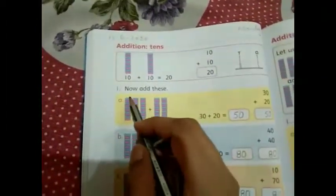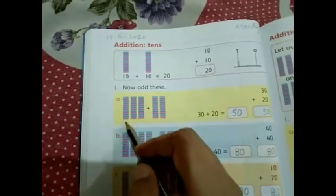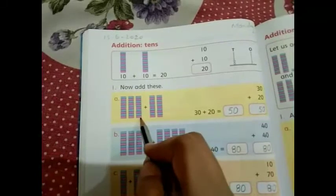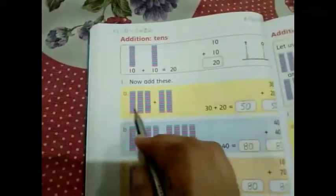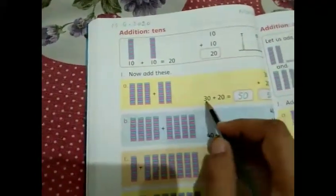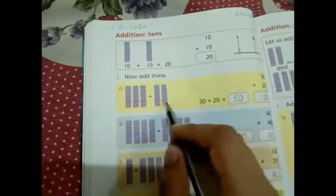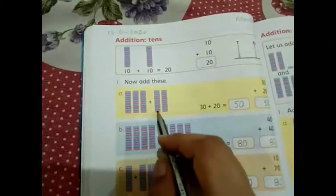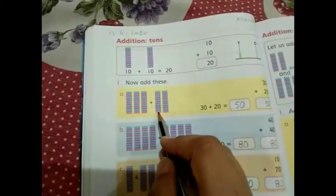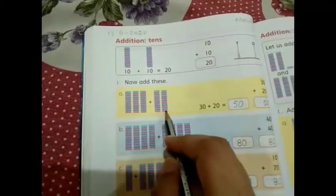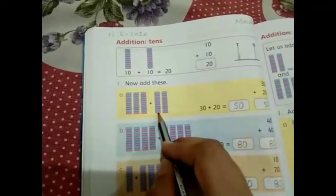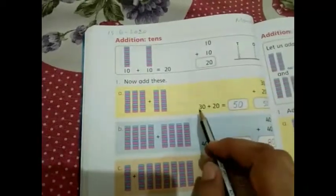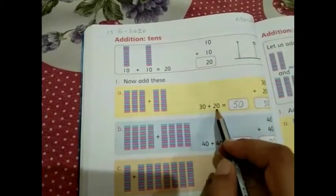There are, as we know, it is equal to tens: 1 ten, 2 tens, 3 tens. So it is 3 tens, which means 30. Plus, now add the second value, which is 1, 2. 2 tens means 10 and plus 10, which is equal to 20. So 30 plus 20.